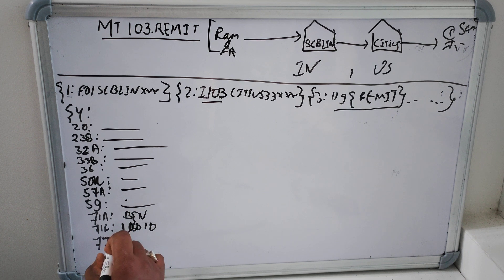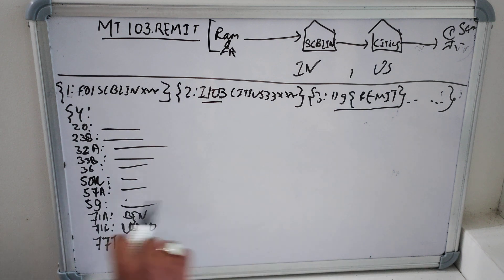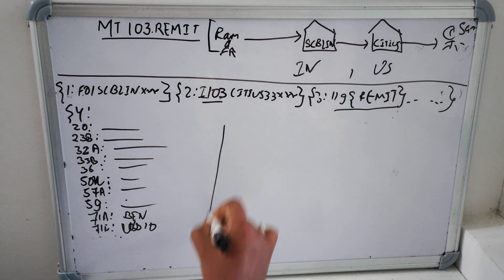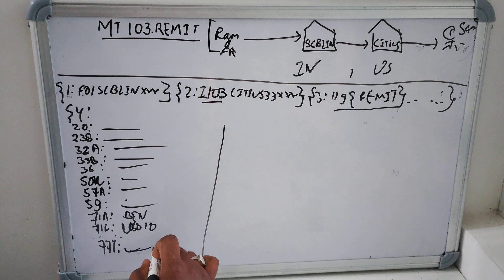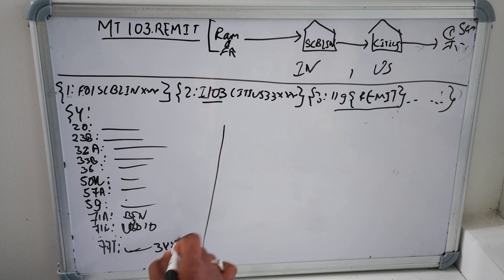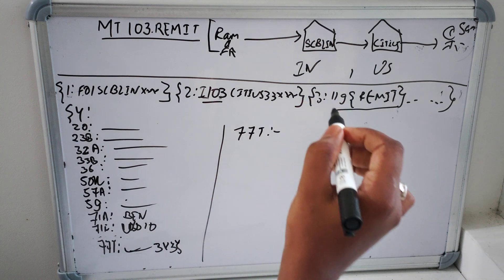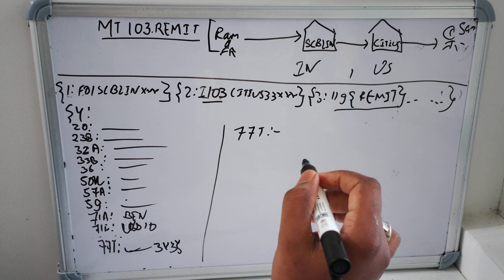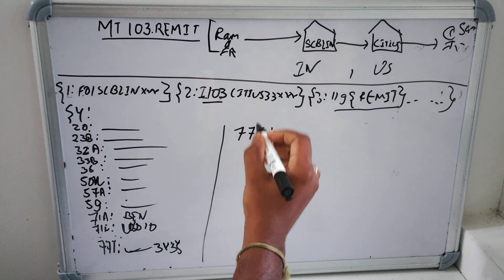77T I'll just explain in this column. 77T will be basically 3 into 35 character. Now 77T if it has to be there, how would they define it? 77T first of all let's understand what is 77T.